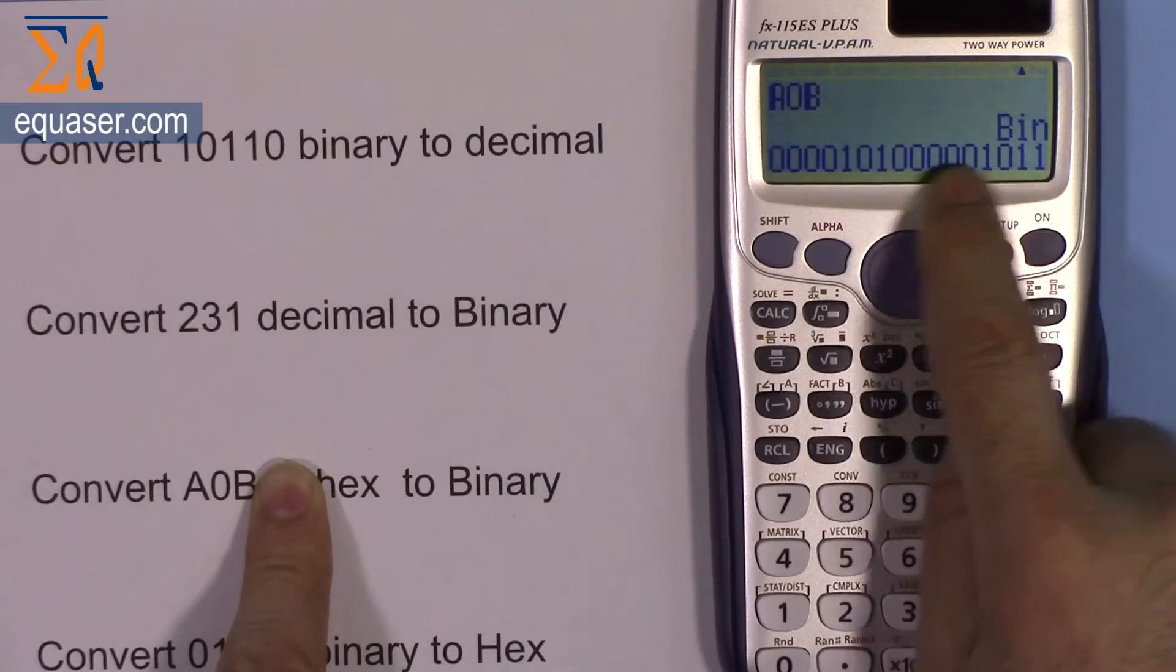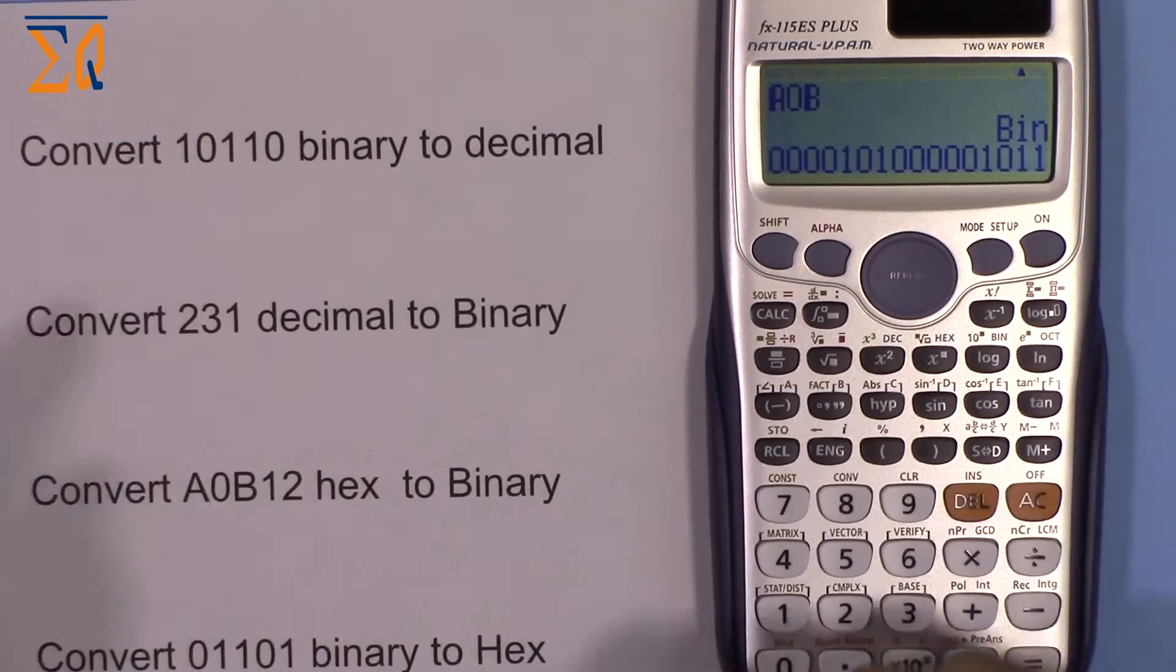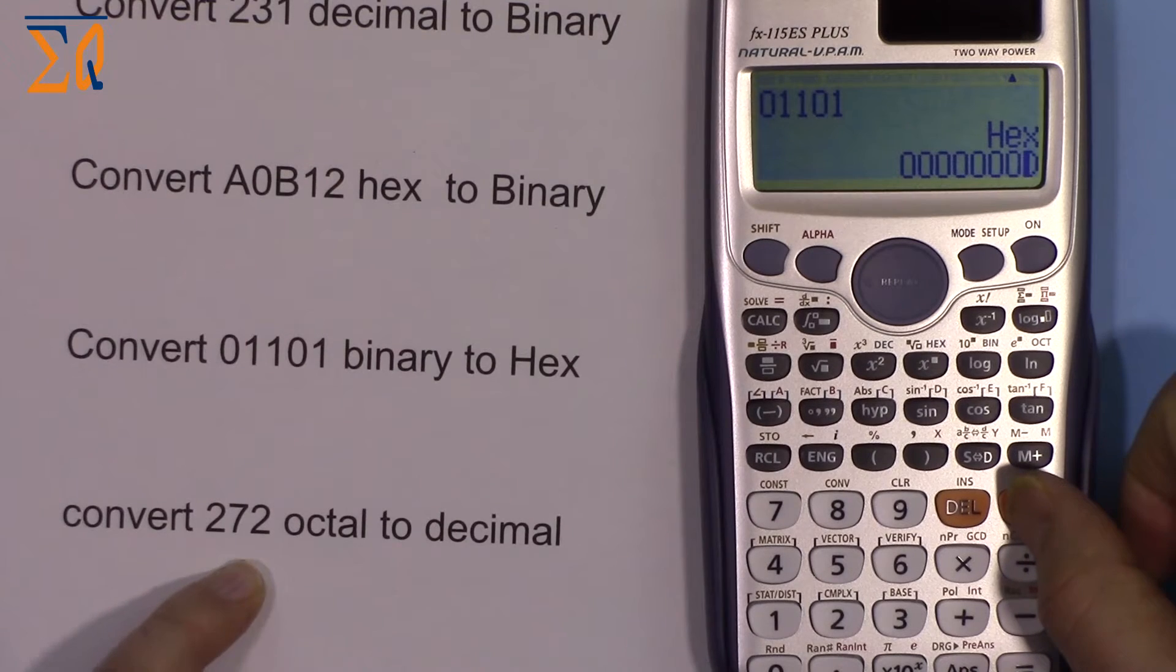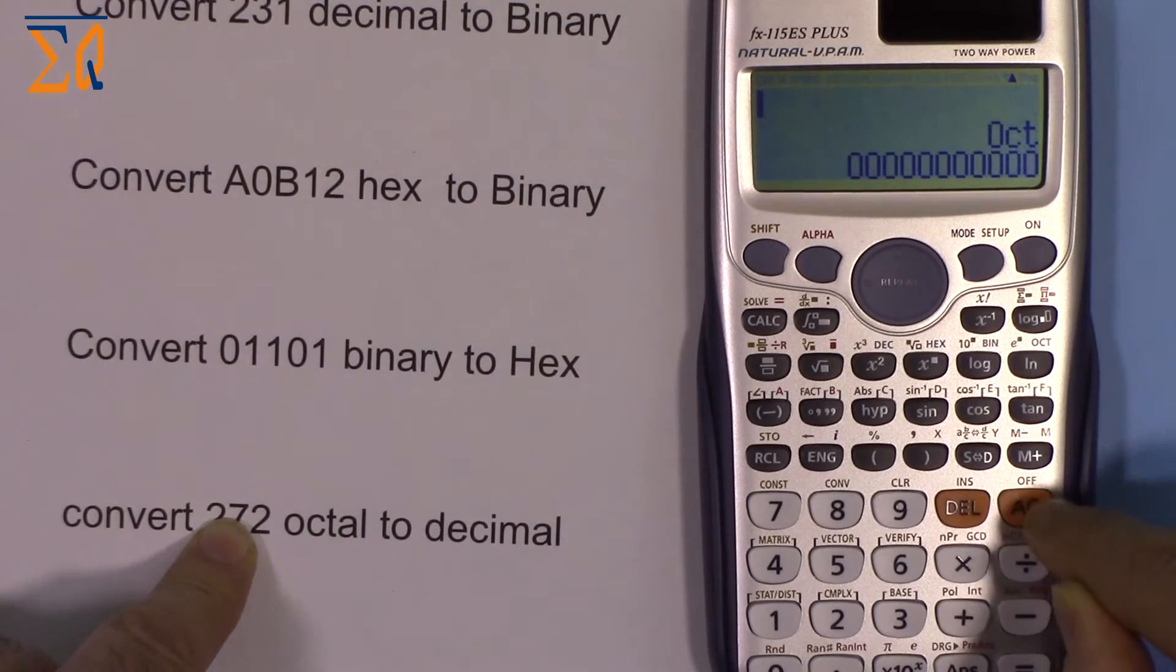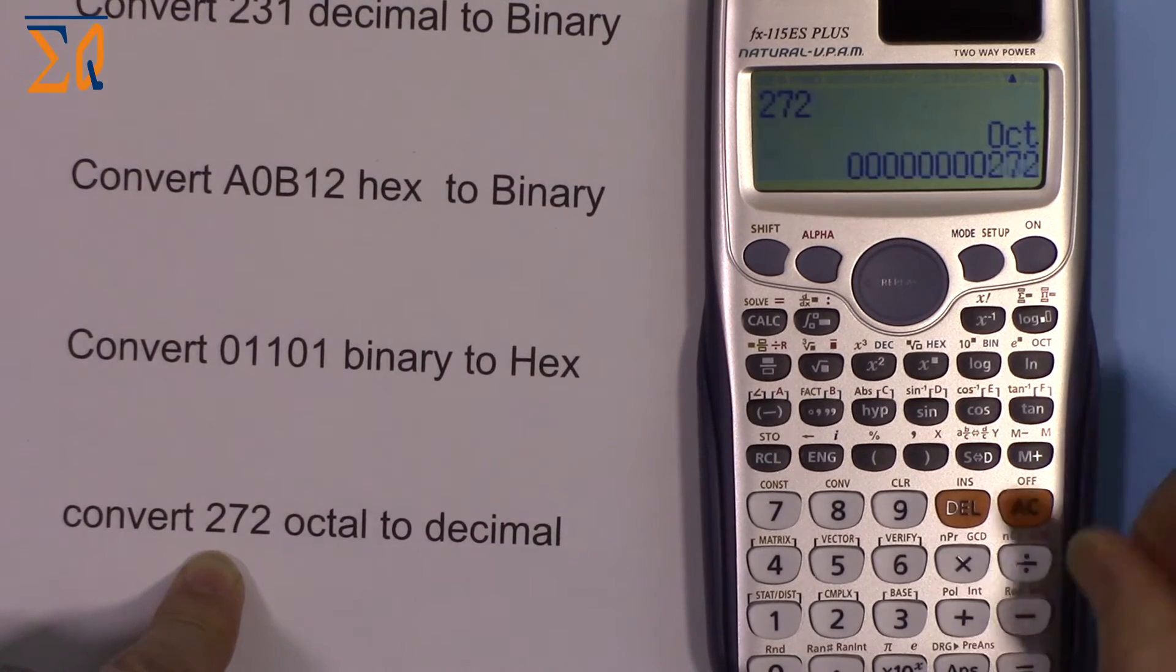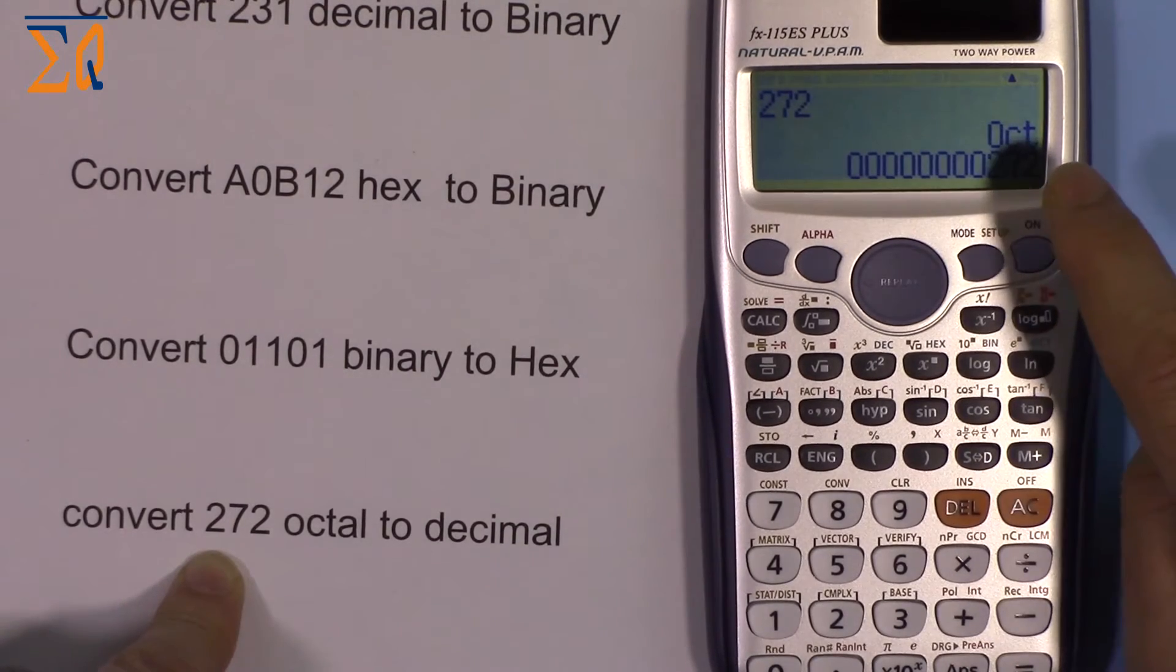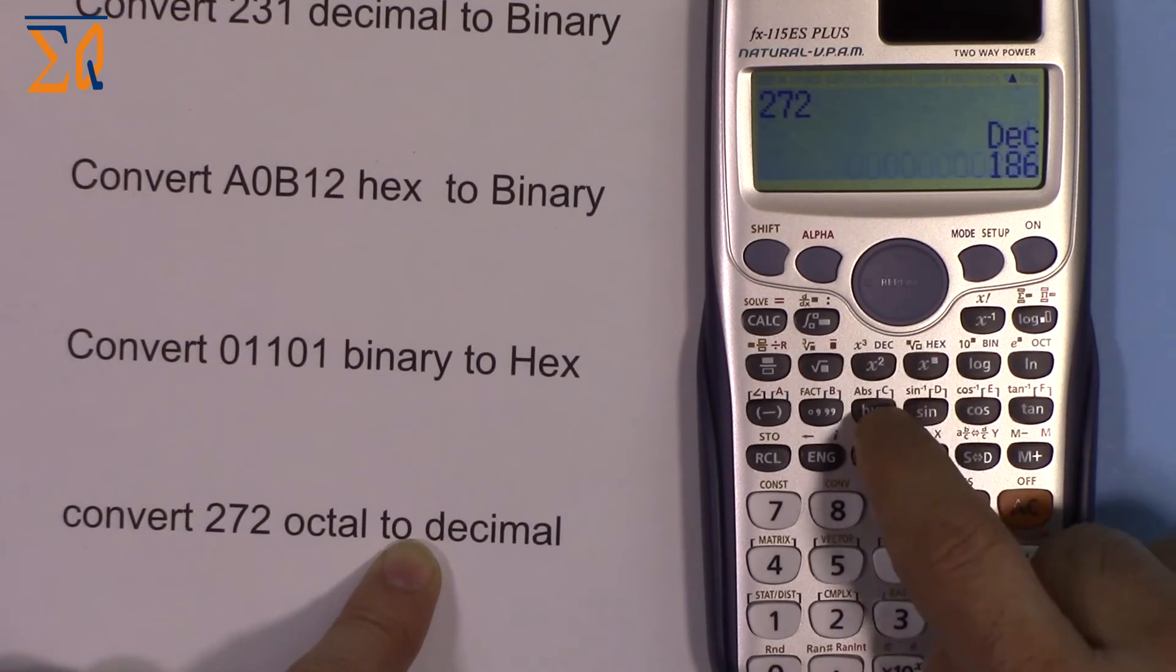To convert 272 octal to decimal, I go to octal mode, press all clear, enter 2, 7, 2, press equal sign. To convert octal to decimal, just press DEC. This is 186 in decimal.